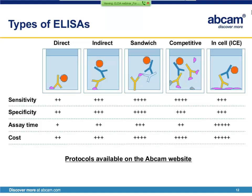A competitive ELISA is commonly used when quantifying small molecules. In a competitive ELISA, a labeled competitor molecule, which is otherwise identical to the target, is incubated with the detection antibody and sample. As the ratio of sample molecule to labeled competitor increases, the signal is reduced because less competitor is able to bind to the detection antibody. The signal on a competitive ELISA actually decreases as the concentration of the target molecule in your sample increases.